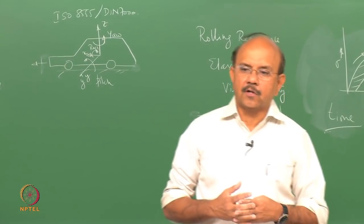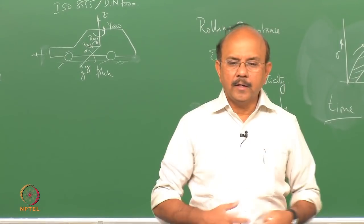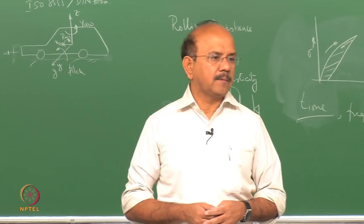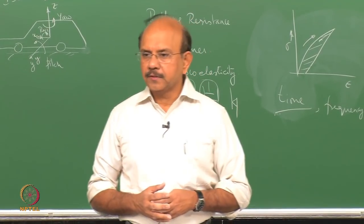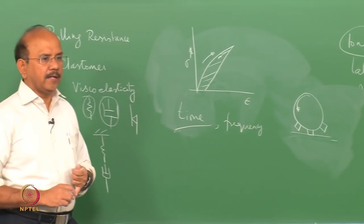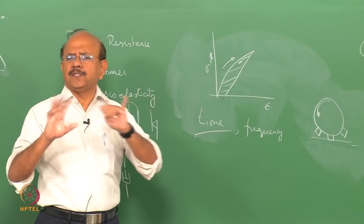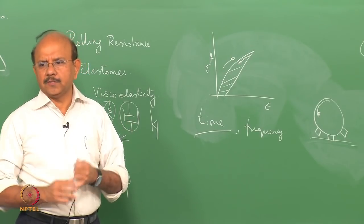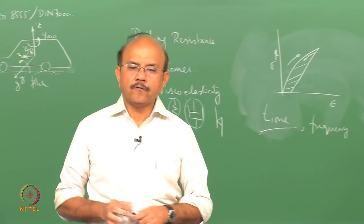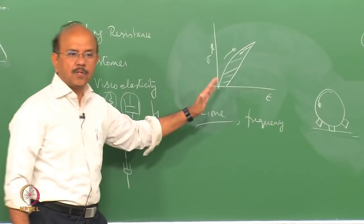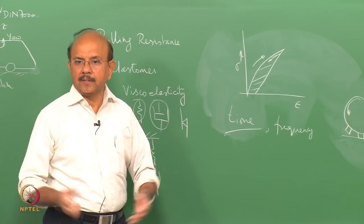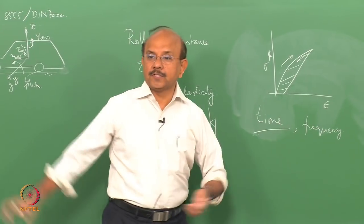Who is going to compensate for this hysteresis loss? The vehicle has to compensate. Because of the material of the tyre, there is hysteresis loss, and that loss has to be compensated by the engine ultimately — and so this opposes the motion.